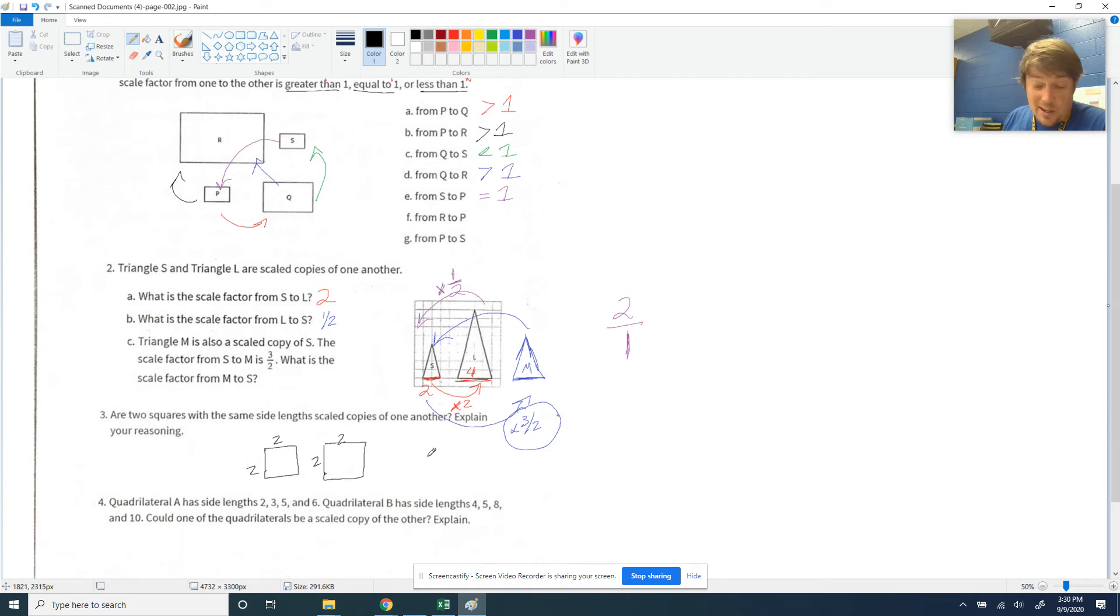The reason why I would say yes, because we've got to have an explanation, is because there is a scale factor, and that scale factor is one. I can multiply by one to get from side to side. It's okay to have a scale copy that's an exact replica. That happens on occasion. And so yes, explain your reasoning. You could say, yes, the scale factor is just one. All the sides stay the same. Something like that.